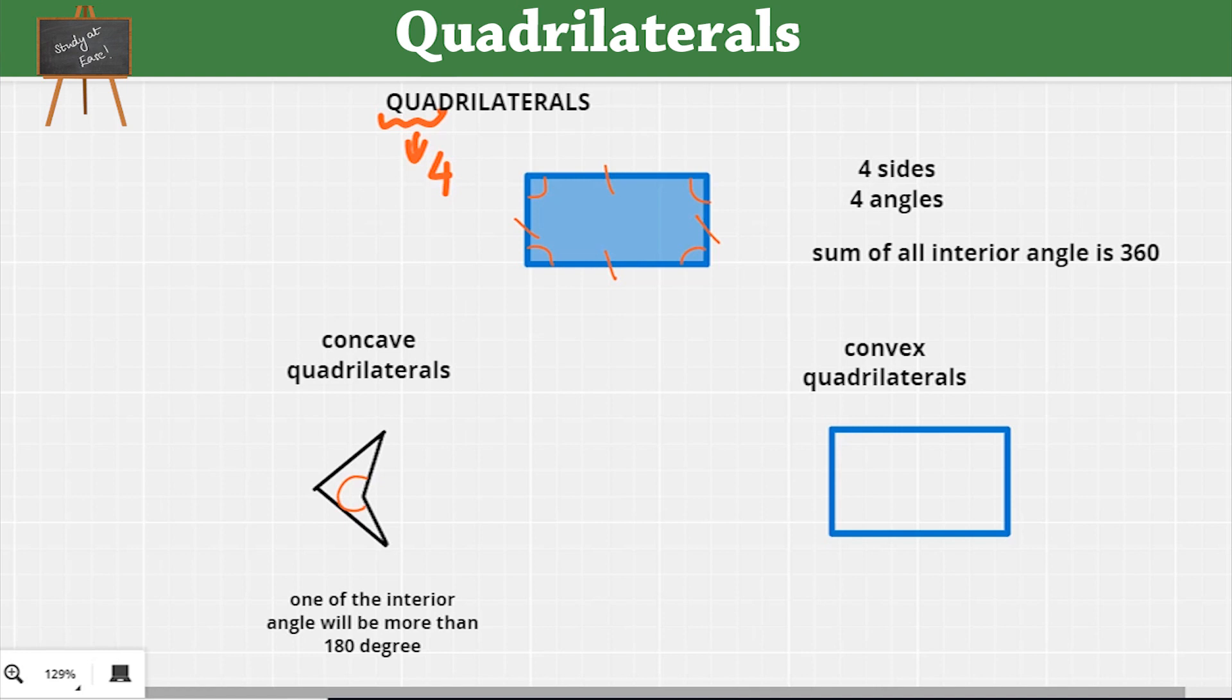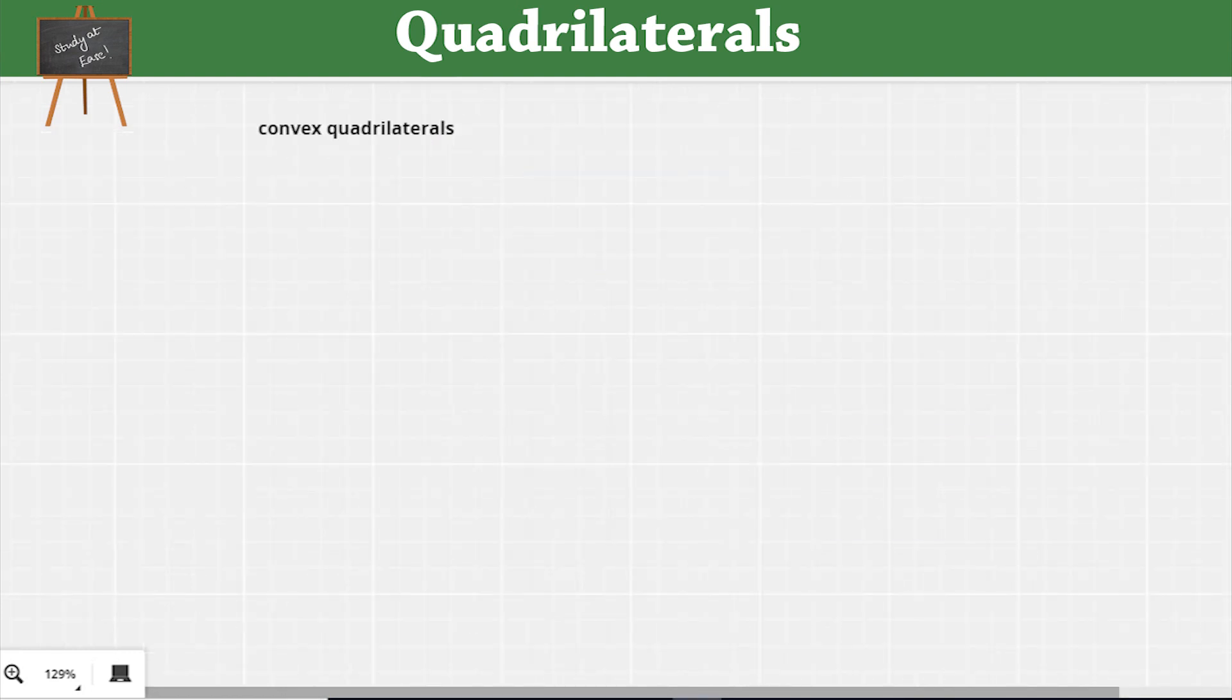Now some of the common examples of a convex quadrilaterals are rectangle, trapezoid, square, etc. Now let's talk more about convex quadrilaterals. The convex quadrilaterals can be further divided into some categories.